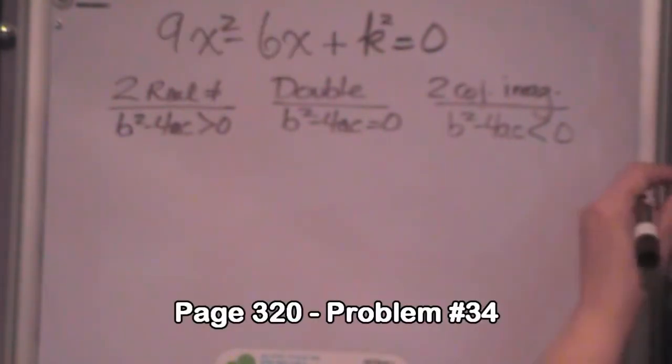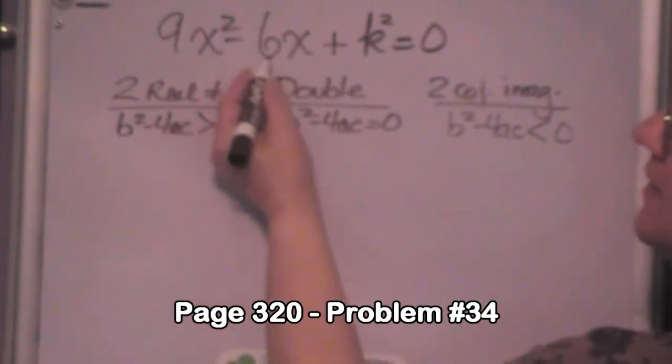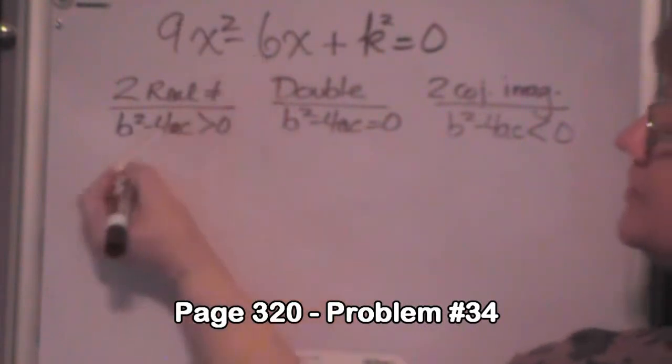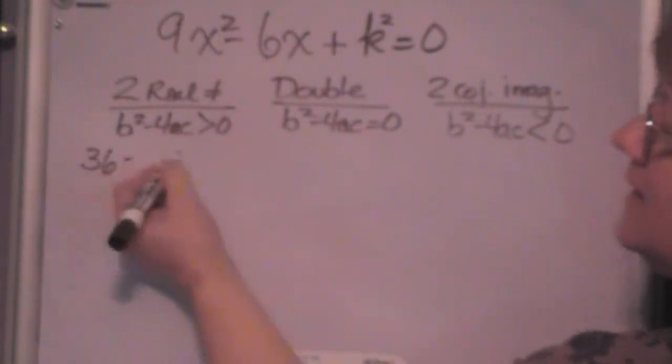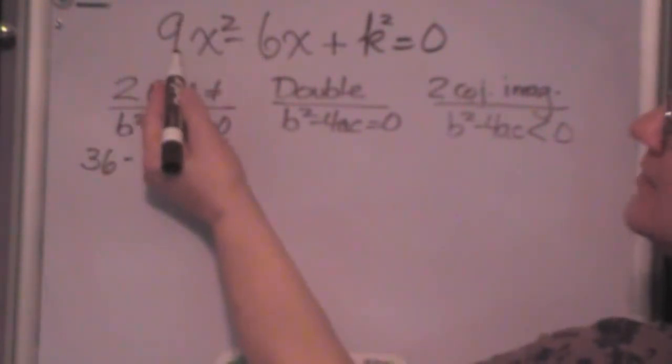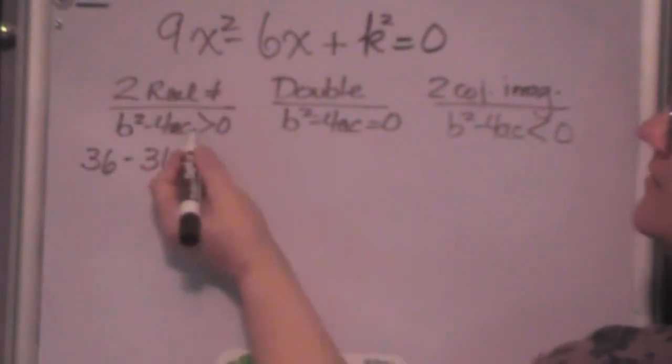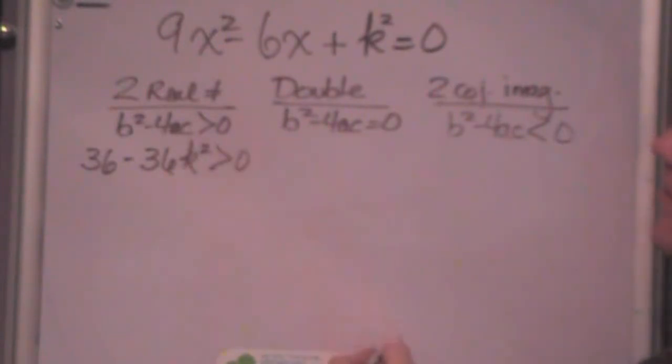Okay, this one's a little more complicated because our k is squared, so we're going to have a little bit different answer. But it's the same basic thing. b squared is 36 minus 4 times a is 36 and c is k squared. k squared greater than zero.